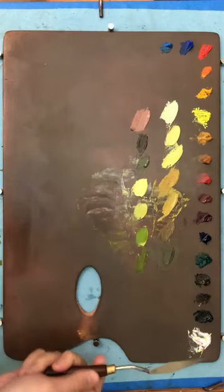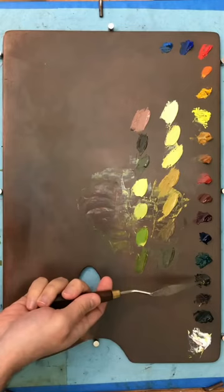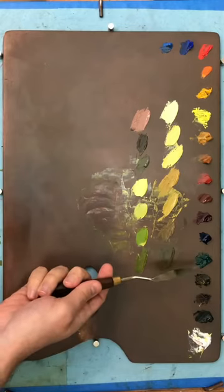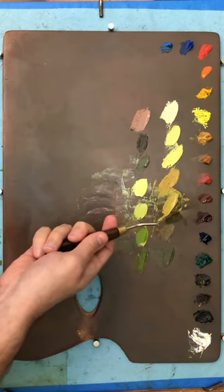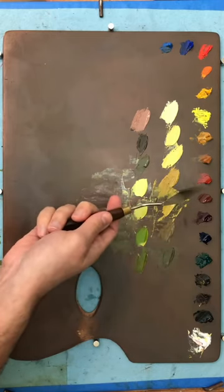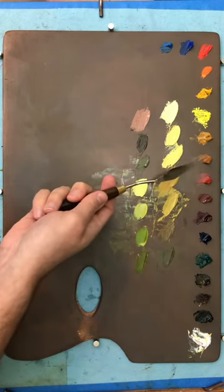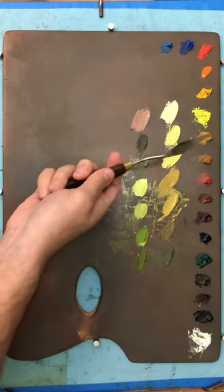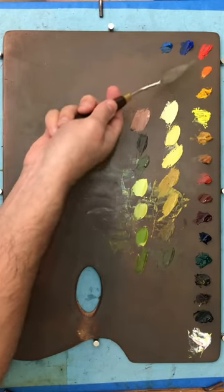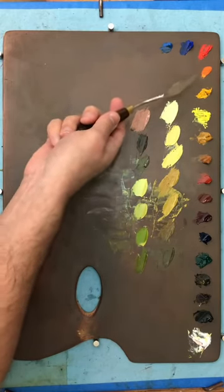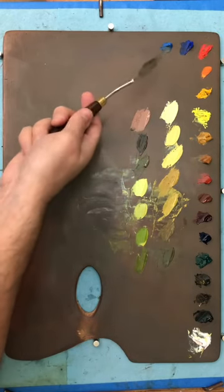Here we go. Flake white, ivory black, burnt umber, raw umber, viridian green, ultramarine blue which I didn't use, alizarin crimson which I didn't use, burnt sienna which I didn't use, venetian red which I didn't use, raw sienna which I didn't use but thought I was going to use, yellow ochre, cadmium lemon, cadmium yellow medium, cadmium orange which I thought I was going to use but didn't use, cadmium red, cobalt blue, and cerulean blue.